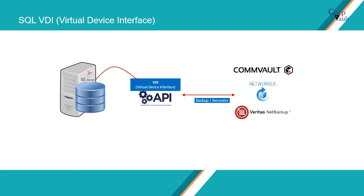VDI supports two types of backup technologies. First, conventional online backups, where the entire contents of the backup set is read and transferred to the backup media. Second, snapshot backups using underlying split mirror or copy-on-write technology. Conventional online backups done through VDI can take advantage of the full range of backup and restore features in SQL Server. Snapshot backups are limited to full database and file or file group backups only. However, snapshot backups may be rolled forward with conventional database differential, file differential, and transaction log backups.